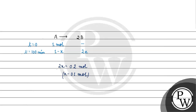Now we use our equation: K = 2.303 divided by T. T is 100 minutes, times log base 10 of the initial concentration of A, which is 1, divided by A after 100 minutes, which is 1 minus x, that is 1 minus 0.1 equals 0.9.